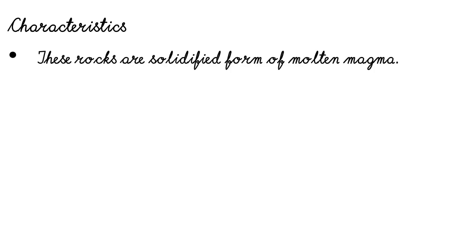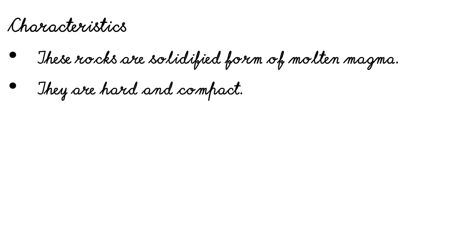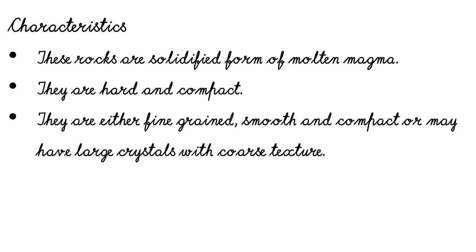Following are the characteristic features of igneous rocks. First, these rocks are the solidified form of molten magma — igneous rocks are formed due to the cooling and solidification of hot and molten lava on the surface of the Earth. Second, they are hard and compact, meaning igneous rocks are not easily broken and they are compressed together.